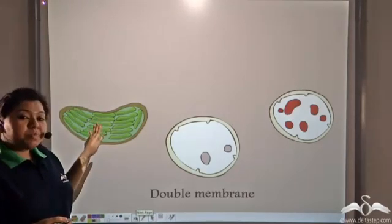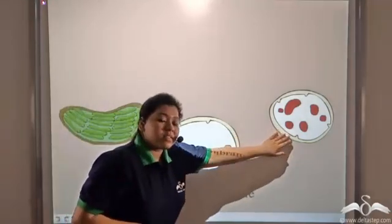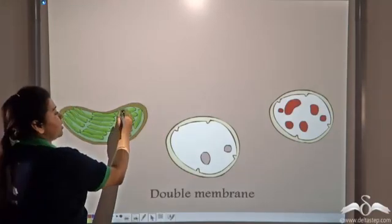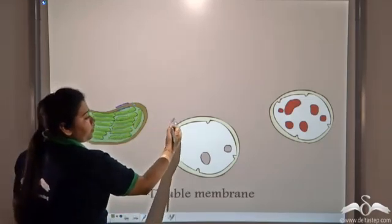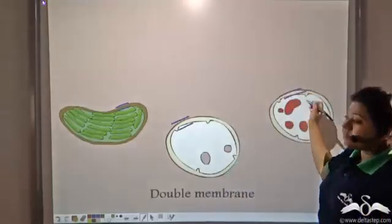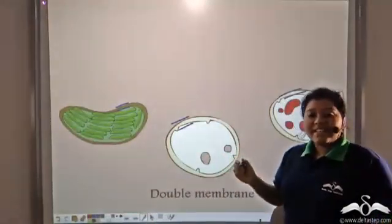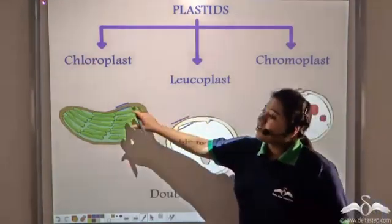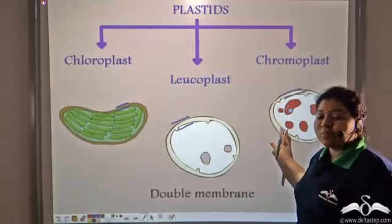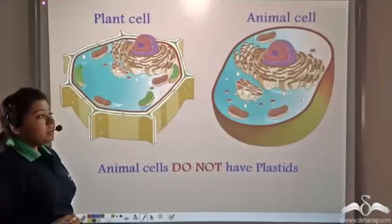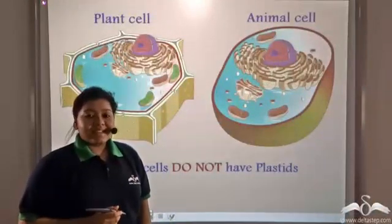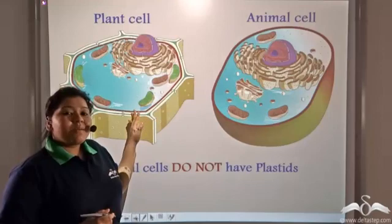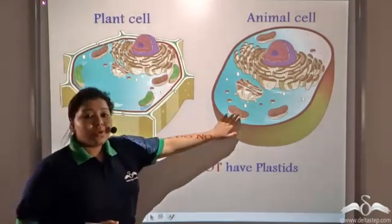So we have talked about the chloroplasts, the leucoplasts, and the chromoplasts. Notice that all these three structures are double-membraned — they all have double membranes. Now all these three structures can collectively be called plastids. So plastids consist of chloroplasts, leucoplasts, and chromoplasts. Plastids are present only in the plant cell — animal cells do not have plastids.